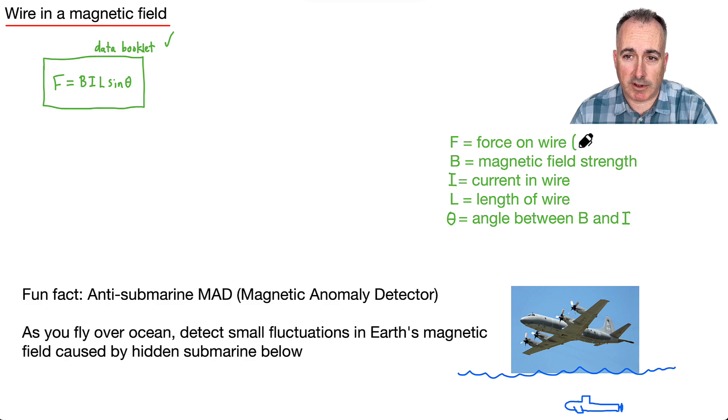Okay, so again, well, F is going to be the force on the wire. That's in Newton's. Magnetic field strength is going to be in Tesla's. Current, current is measured in amperes. Length of the wire, that's going to be in meters. And then theta will be the angle between B and I. That'll be in degrees.